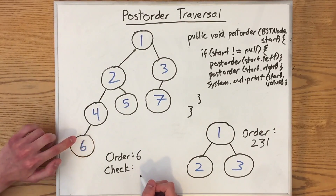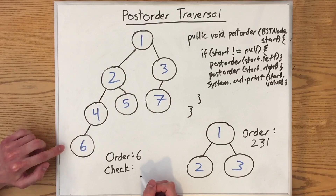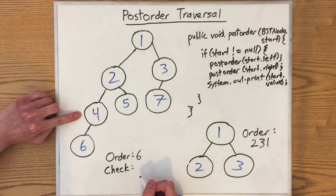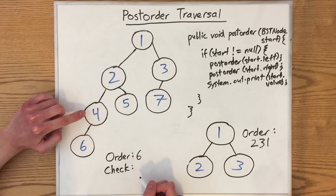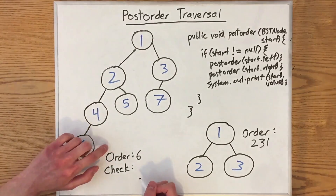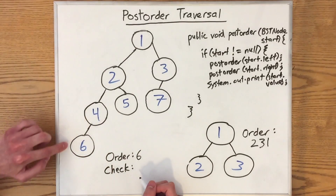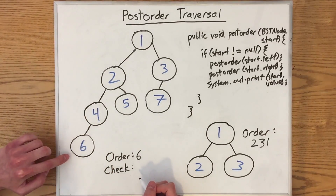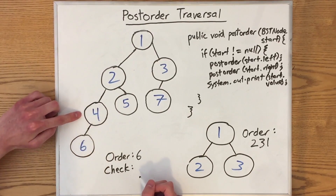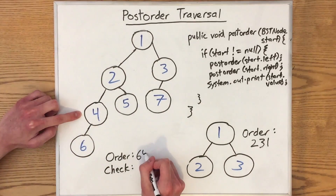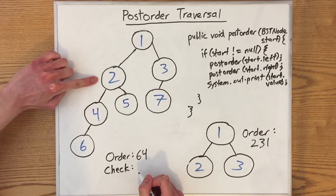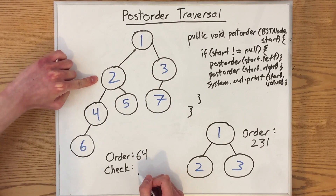That means this left subtree is done. Now the tree rooted at this node tries to call post-order on its right subtree, but it doesn't have one. So that's also done. So finally, since we recursively went through post-order on the left subtree and the right subtree, we print out its value, which is 4.